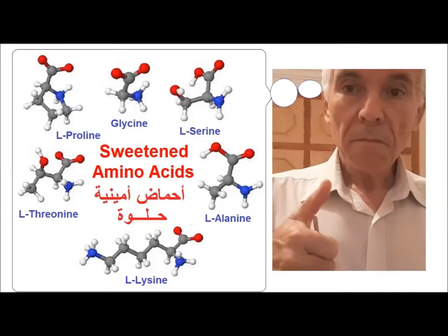What are sweet amino acids? Here we show the six sweet amino acids in their L configuration, which are proline, glycine, serine, threonine, alanine, and lysine. Serine and threonine are amino acids with hydroxyl (OH). Glycine is characterized by another amino group at the side chain. Except glycine, without an asymmetric carbon, we cannot speak about L and D configuration. All these amino acids have their L configuration and they are all sweet.